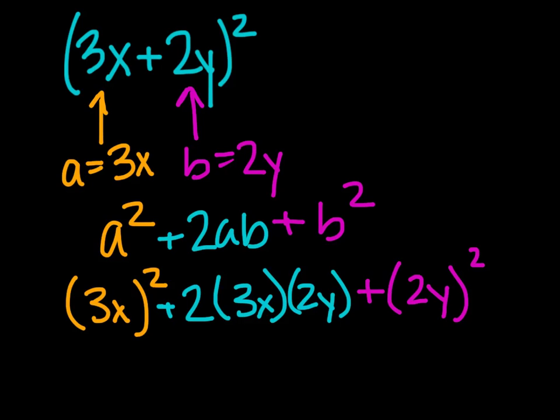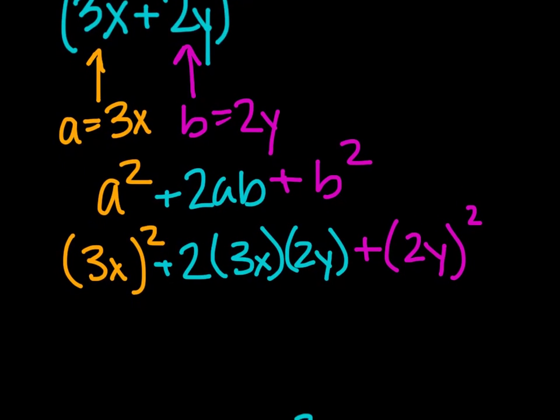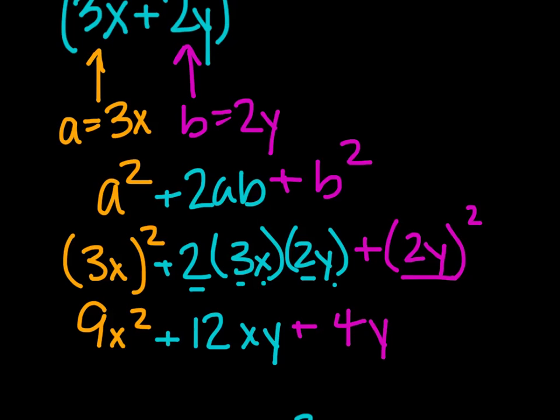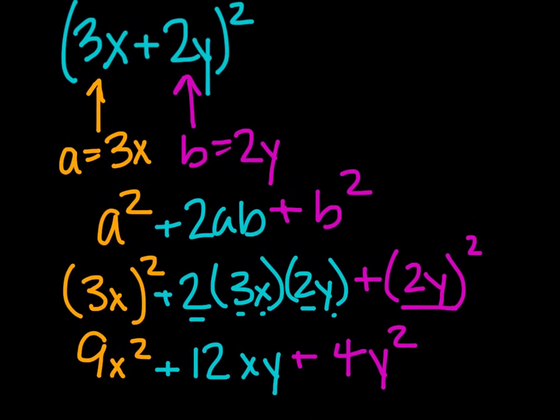Let's do the simplification. 3x squared is really 9x squared. 2 times 3 times 2, we end up getting 2 times 3 is 6, times 2 is 12. And then we have x and a y. And then our last term, we have 2y squared, which simplifies to 4y squared. So here is our final form.